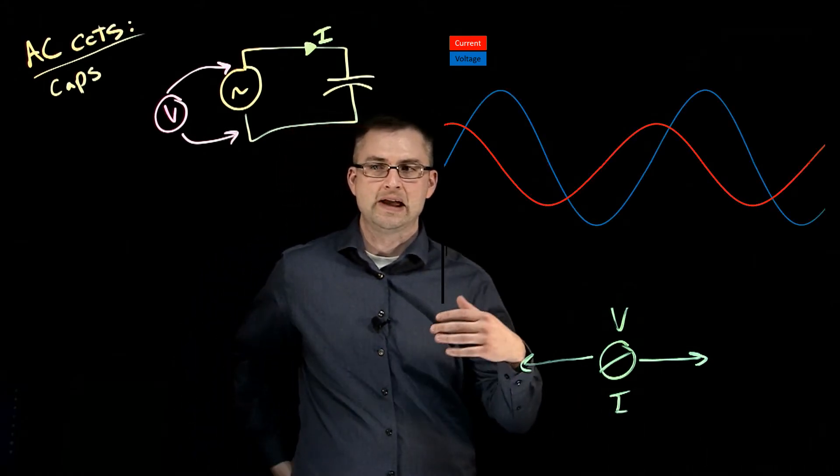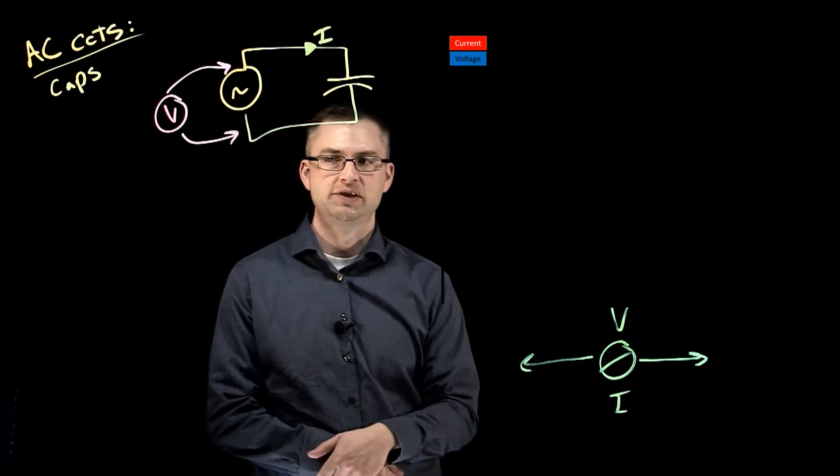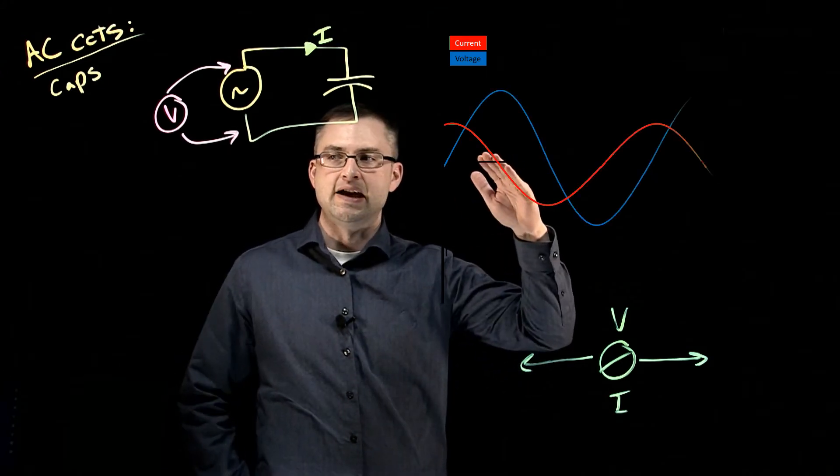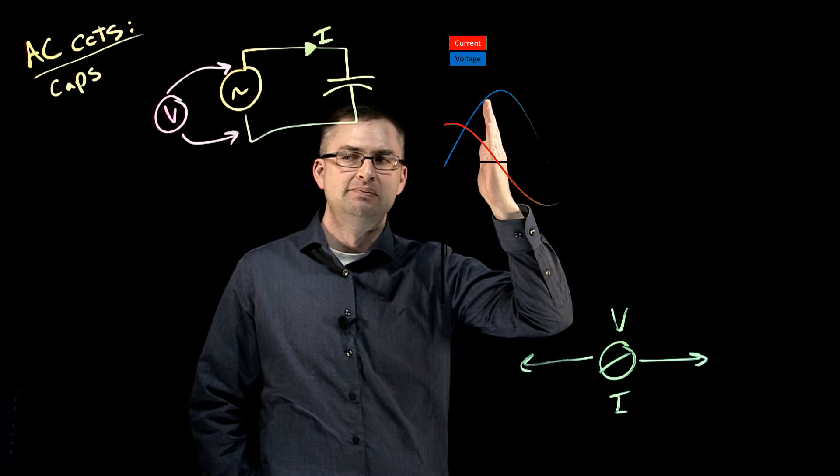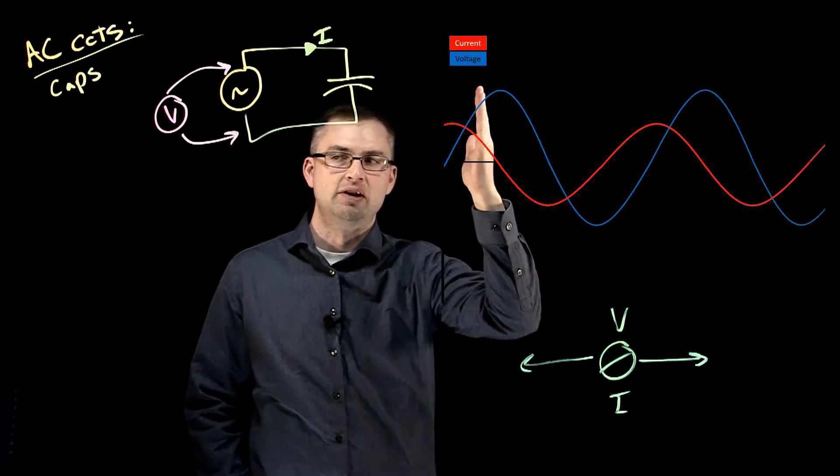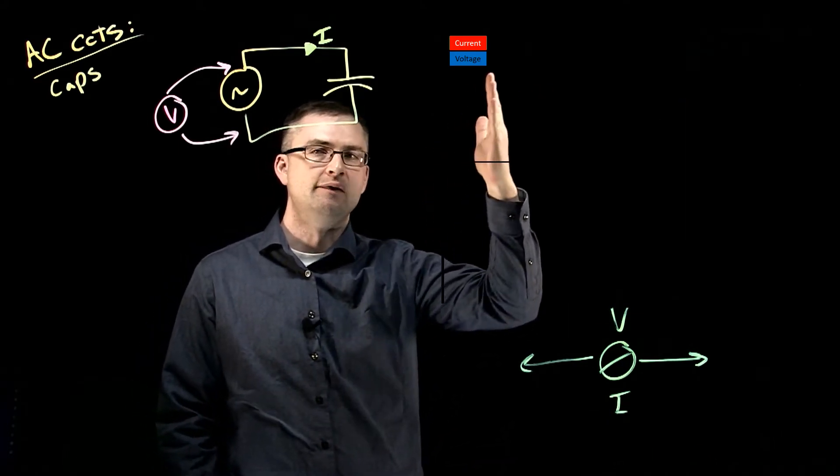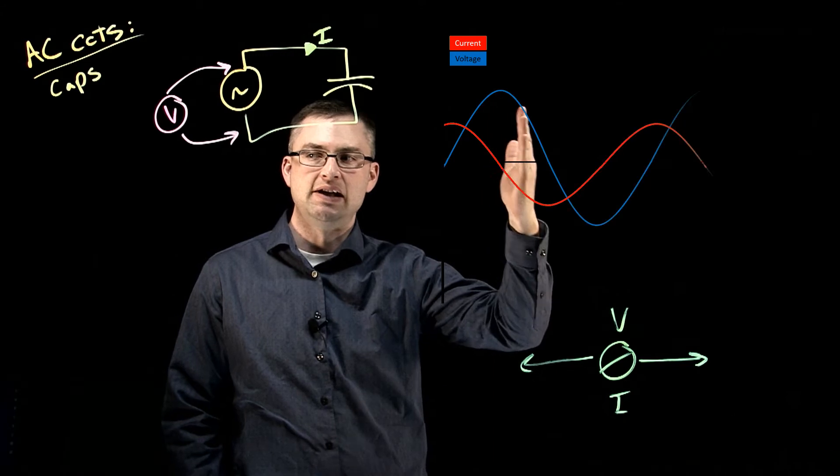So here we go. We have our current in red and our voltage in blue. And we can see that the voltage is actually lagging behind the current. So we have our current at a peak here. We've got our voltage at a peak that's a little bit further behind.